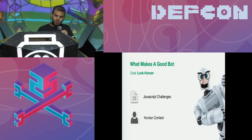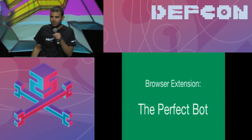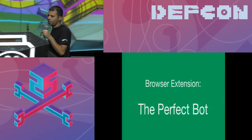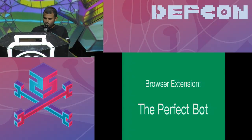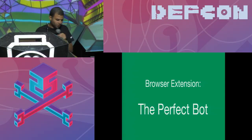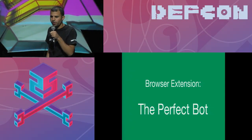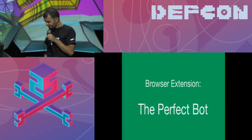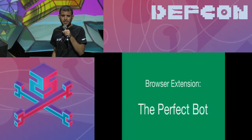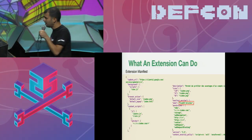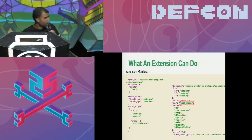This makes browser extensions the perfect bot — it can run in the context of a user and copy any JavaScript. To understand the full capabilities of such an extension, let's have a look at the manifest file of the malicious extension we just saw attacking Wix.